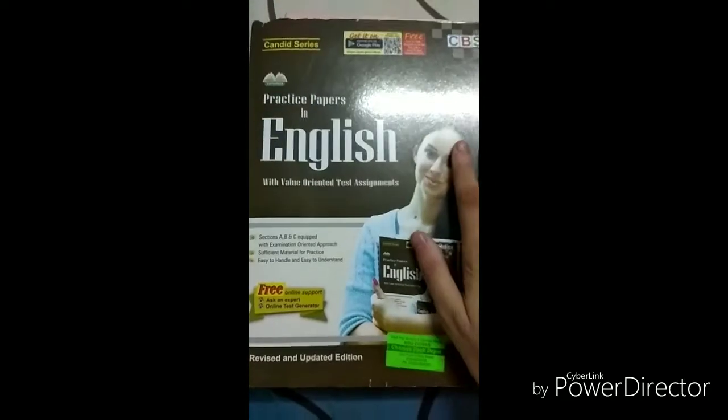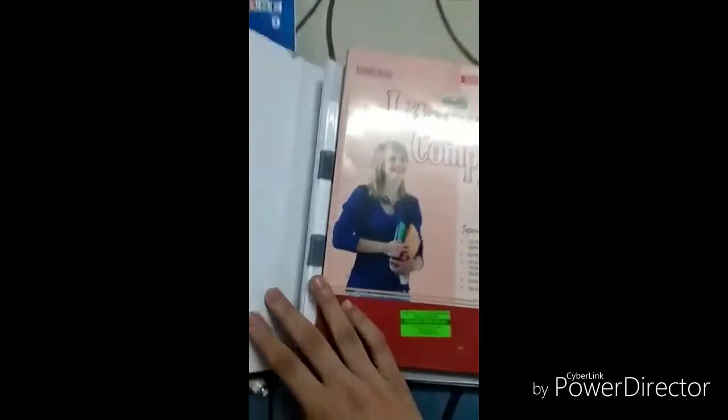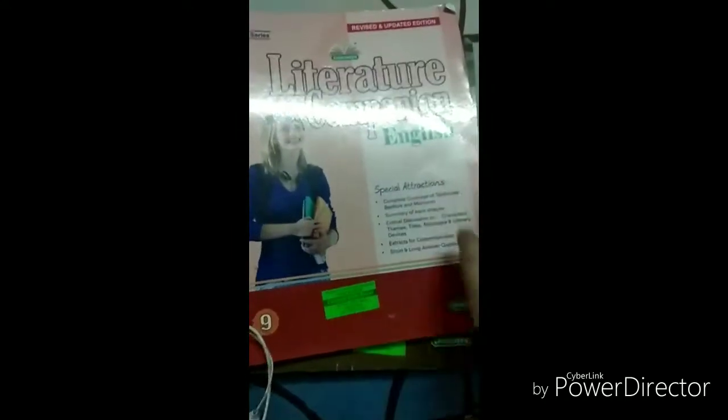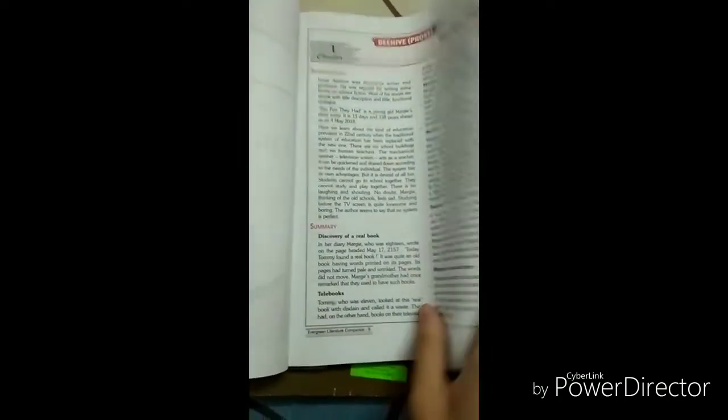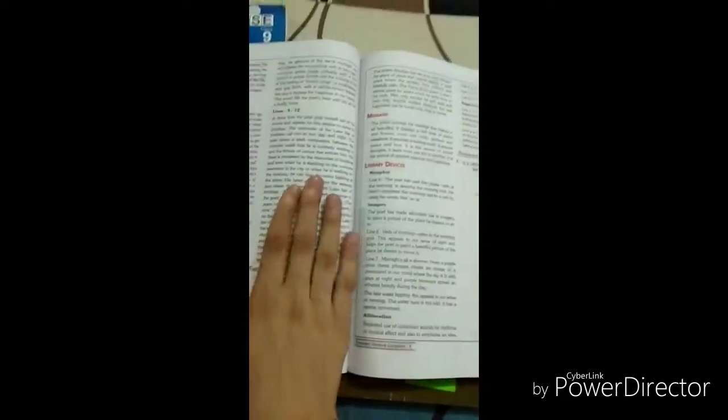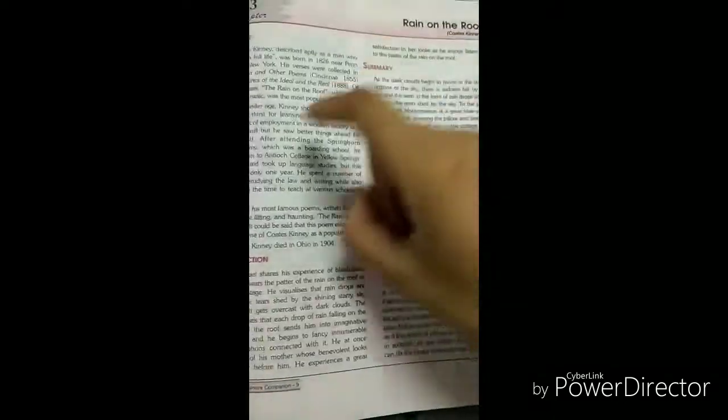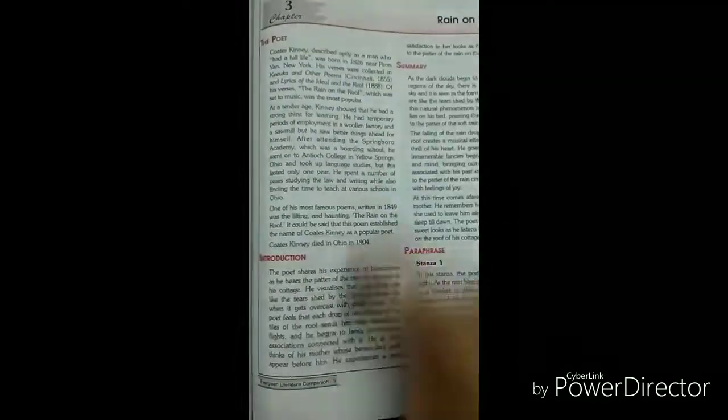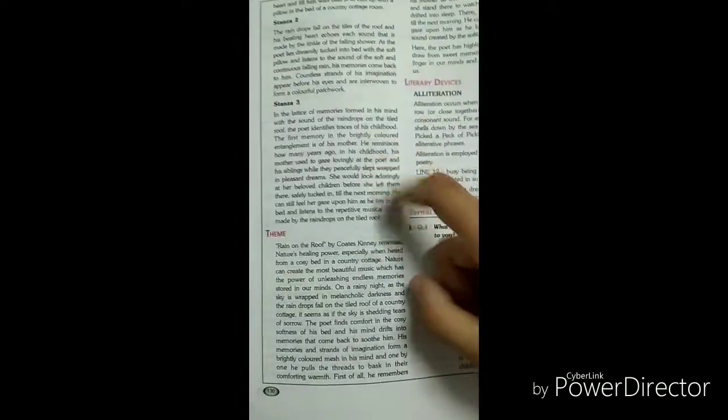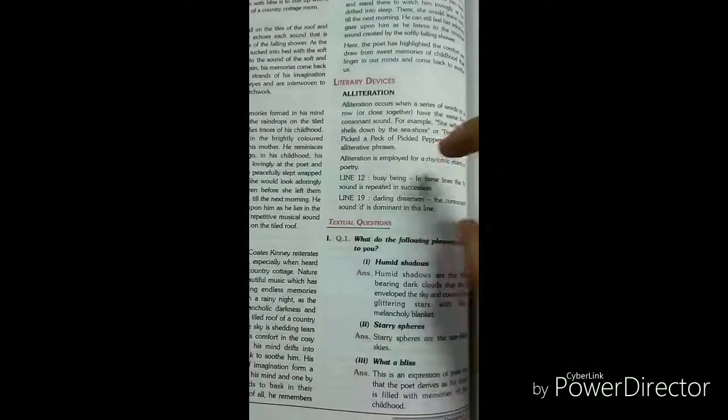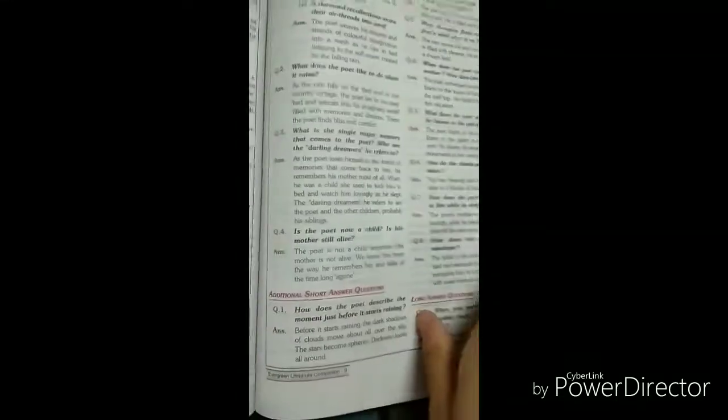For literature, I have practice papers of Evergreen Candid Series and I use these. It has the literature companion and it's best for literature. Everything written in this book is very useful. Like let me show you one thing. Let's take the poem Rain on the Roof. So first of all here, about the poet is given, then introduction, and then summary is given. Then all the paragraphs are explained, each line is also explained here. Then theme is given which is very useful for long questions. And then poetic devices, that is literary devices, are given. And then textual questions, answers to NCERT. After that, additional questions, long and short both are given. And after that, assignment is also there to solve.